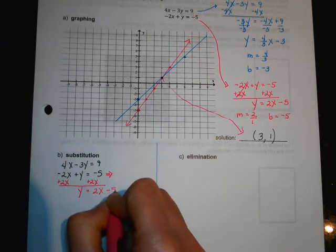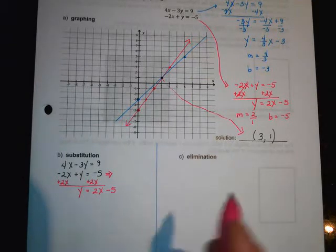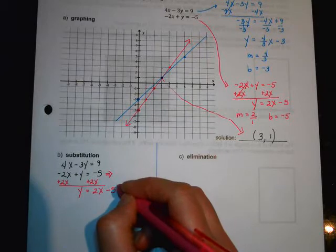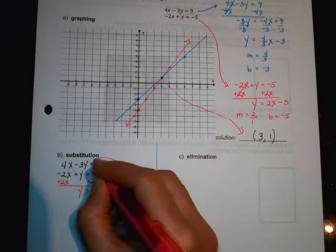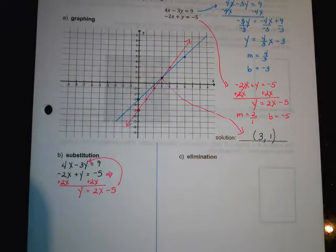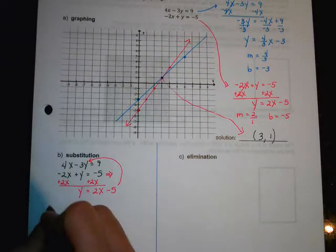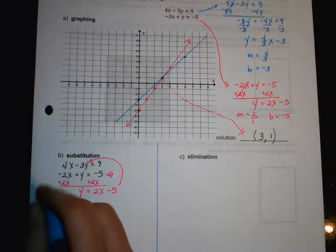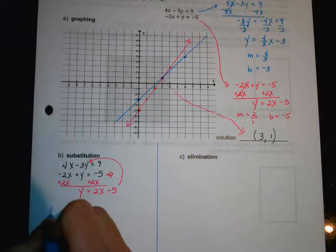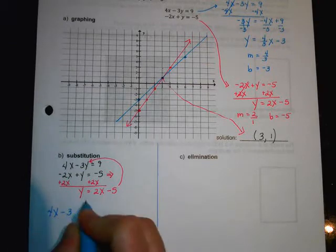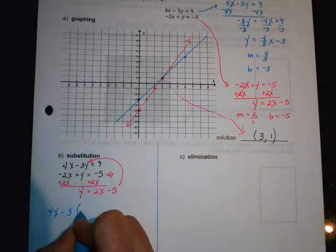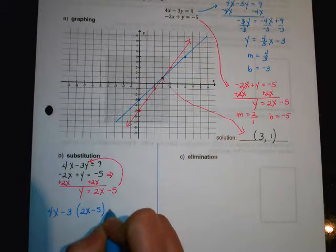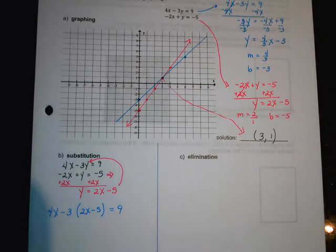So it's going to be easy to get the y by itself. You know what? I can just do it right down here. So to get y by itself, I'm just going to add 2x to both sides. So y is going to equal 2x minus 5. And we're going to substitute it in to the equation we haven't used yet, which is that one. So we're going to have 4x minus 3 instead of y. We're going to go 2x minus 5 equals 9. And you guys know how to do this. It's one equation, one unknown.